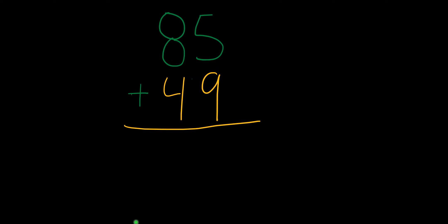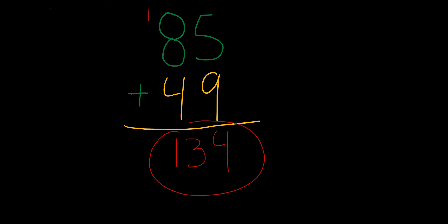In this example I have 85 plus 49. The first thing I'm going to do is add 9 plus 5, which is going to be 14. I'm going to put the 4 down and I'm going to carry the 1. So now we have to add 1 plus 8 which is 9, and then 9 plus 4, that's going to be 13. So our answer is going to be 134.